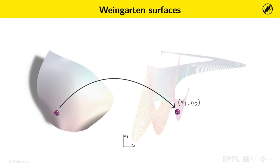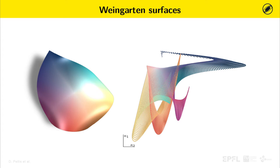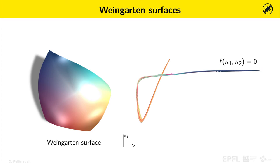For a generic surface, this map forms a two-dimensional region in the principal curvatures plane. For a Weingarten surface, since the two principal curvatures are in functional relation, this map shapes a curve.